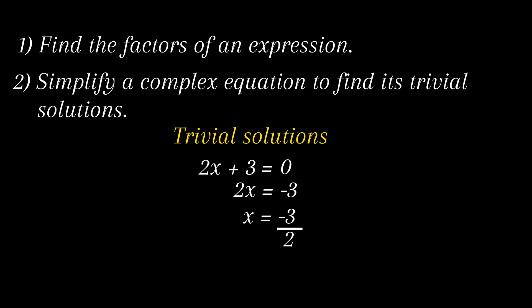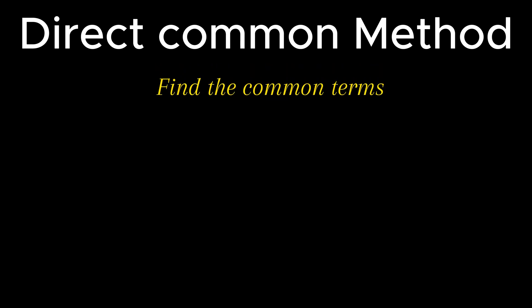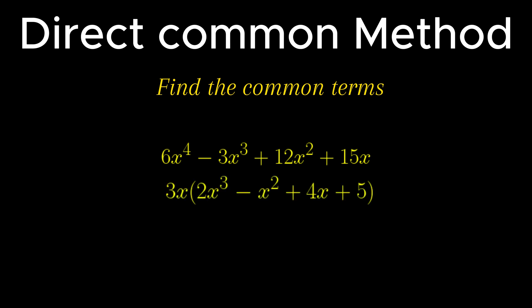Let's begin with the methods used for factorizing a given expression. The first method is very simple and easy to use and is known as the direct common method. As per this method, inspection of common terms has to be done. Consider an expression 6x to the power 4 minus 3x cubed plus 12x squared plus 15x. On careful inspection, it can be observed that 3x is present in all the terms and can be taken as common. Thus the expression becomes 3x into 2x cubed minus x squared plus 4x plus 5.